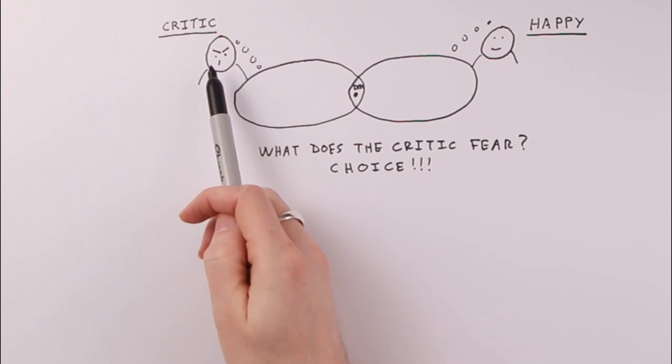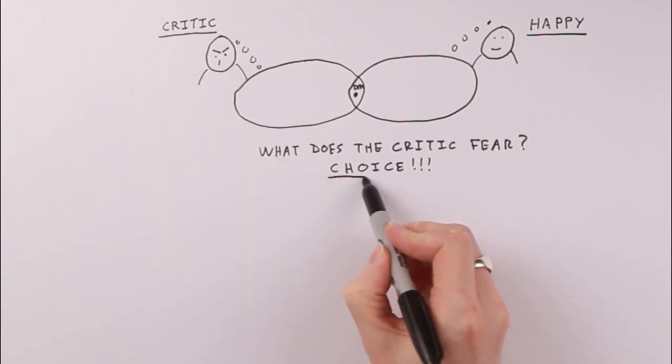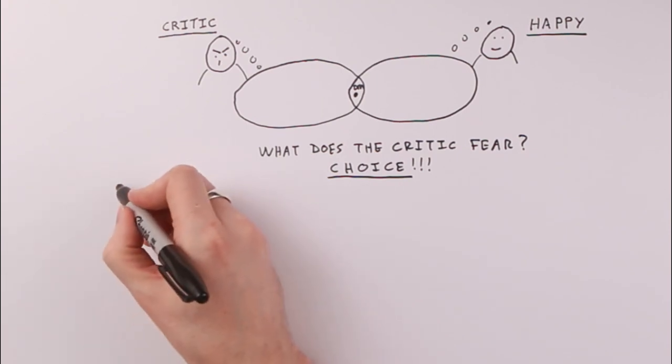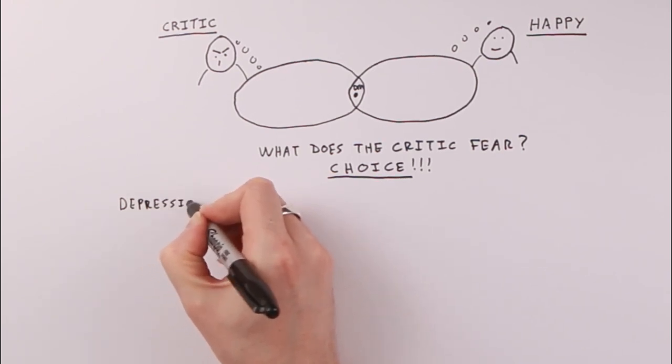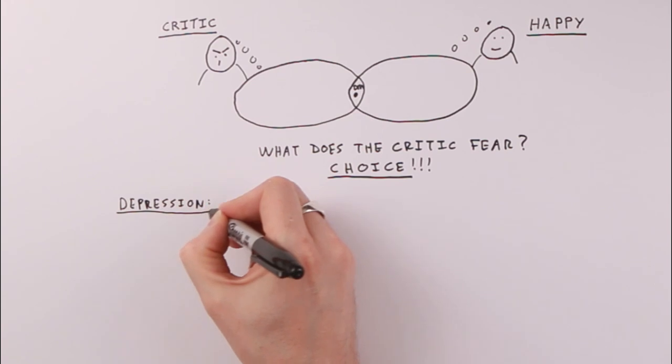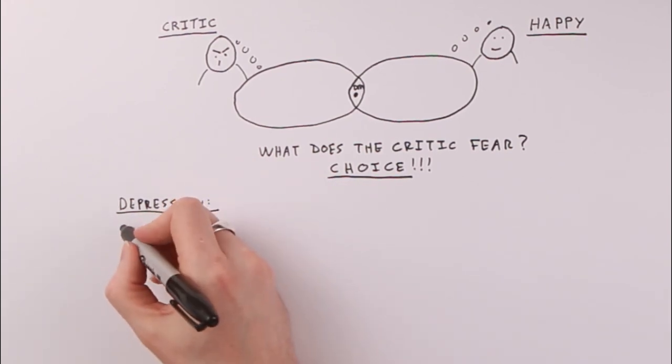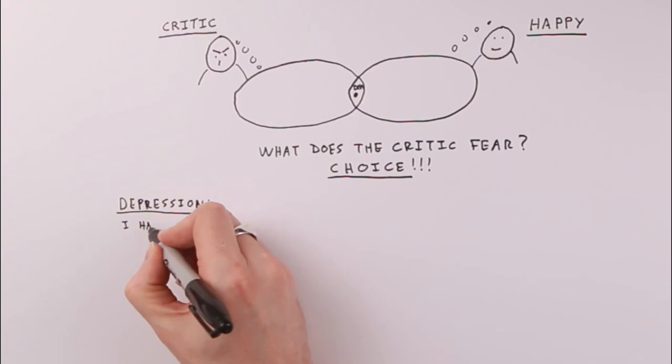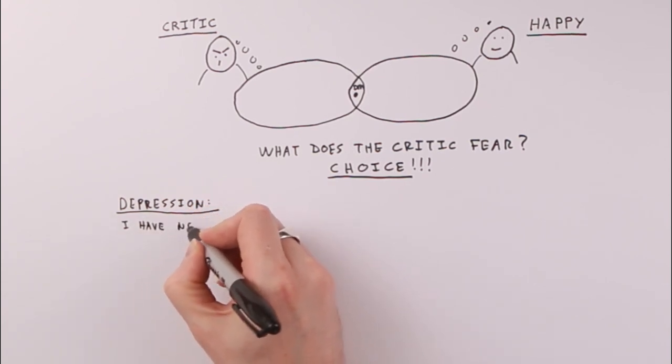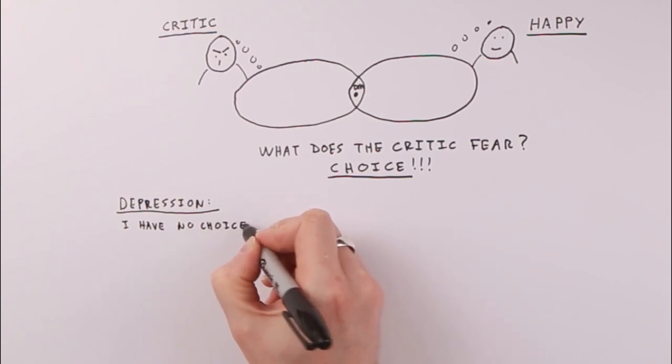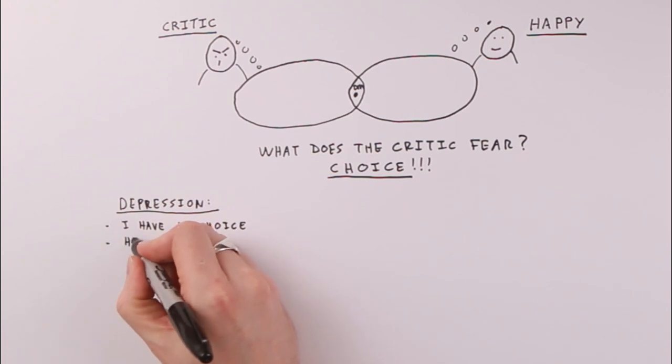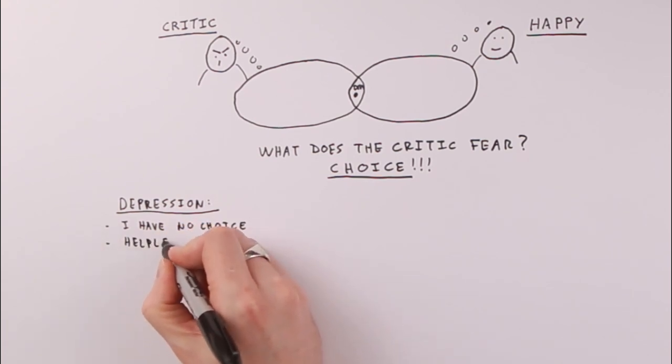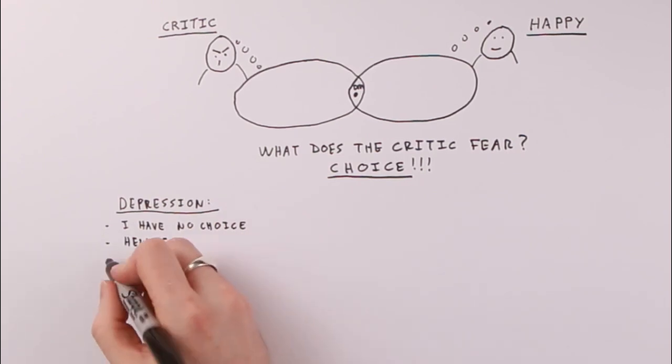Now we know that the critic is afraid of choice. Because if we think of something like depression, what are some of the characteristics that we associate with depression? Well, it's a feeling like I have no choice. It seems as if when we're depressed, nothing we choose is actually going to make any difference. Therefore, choice is gone for me.